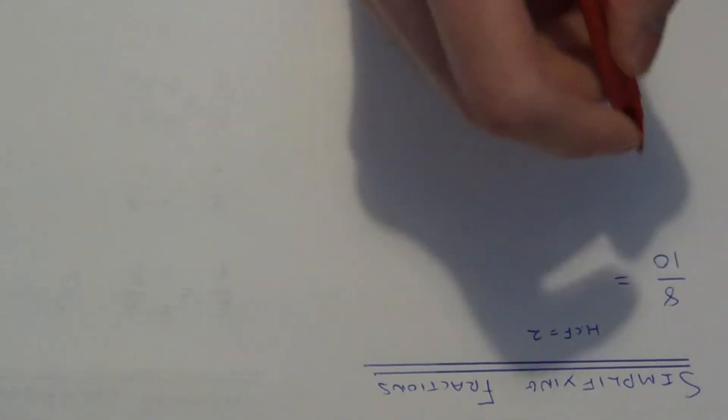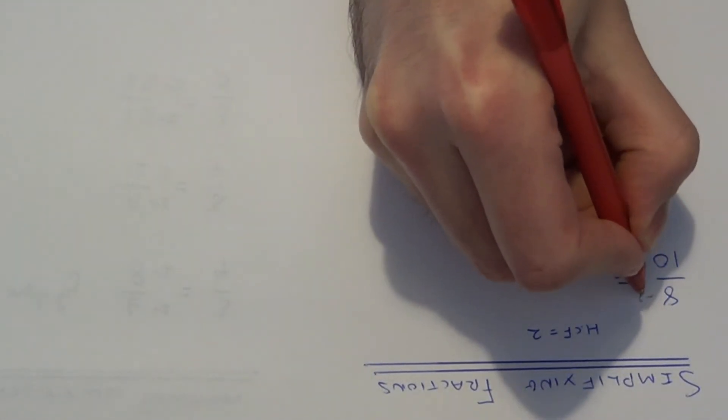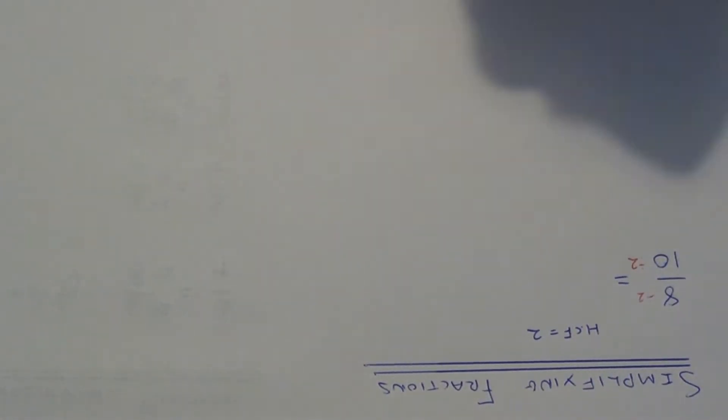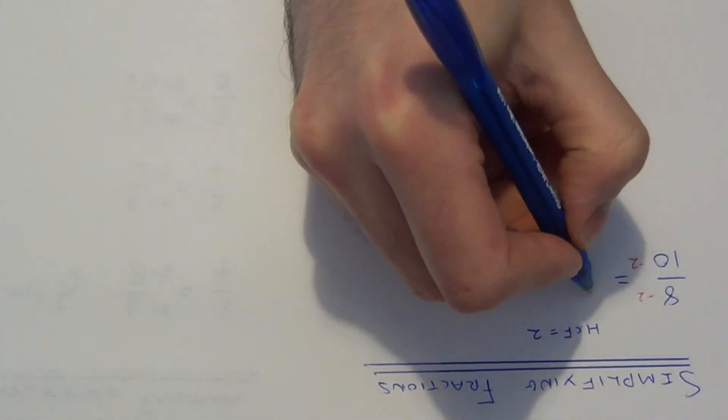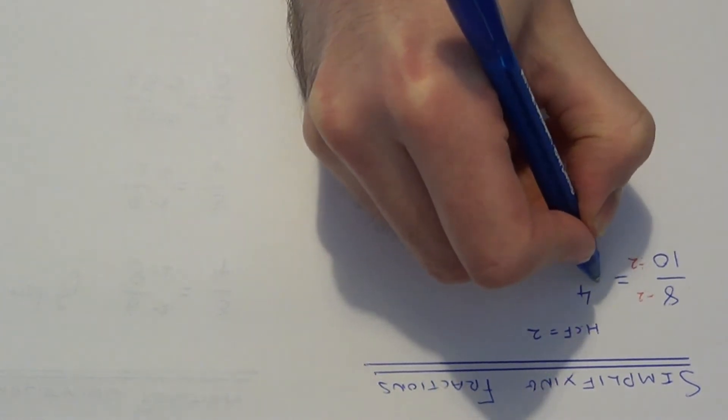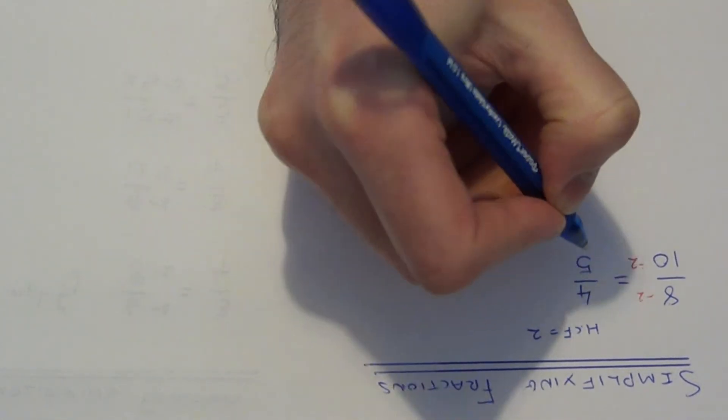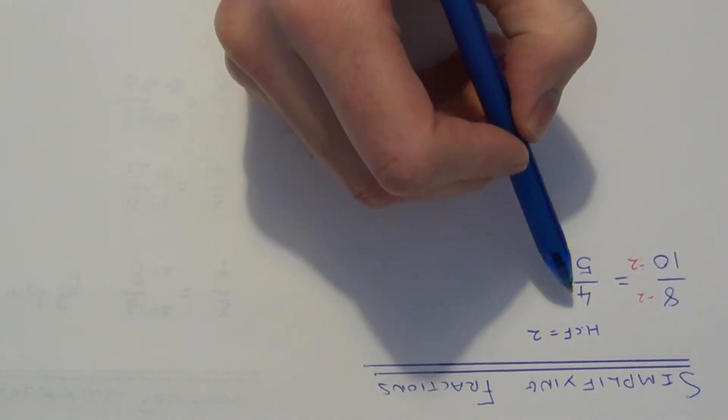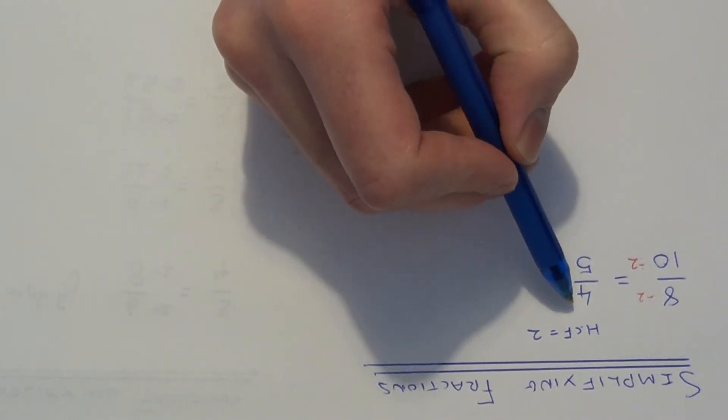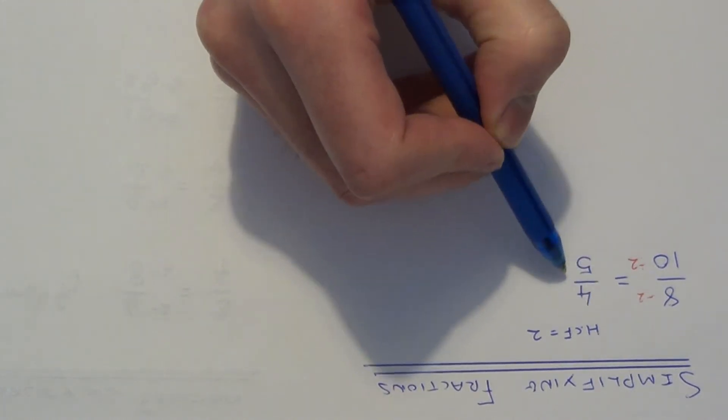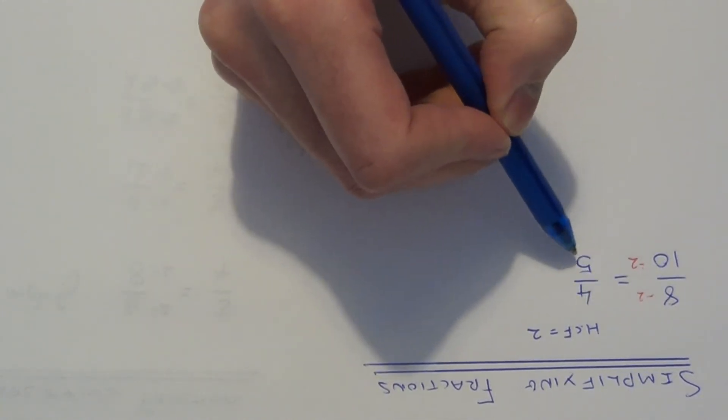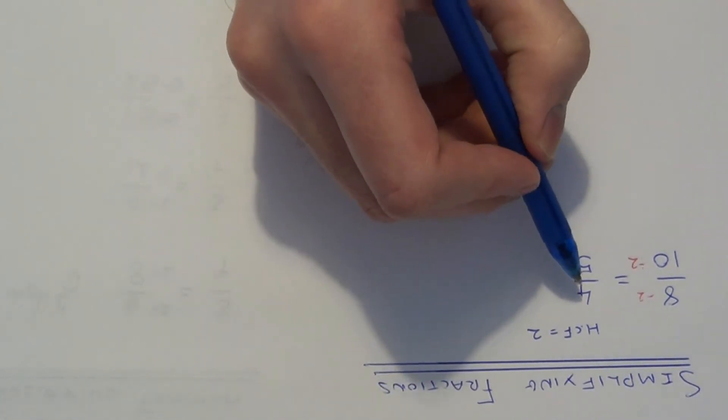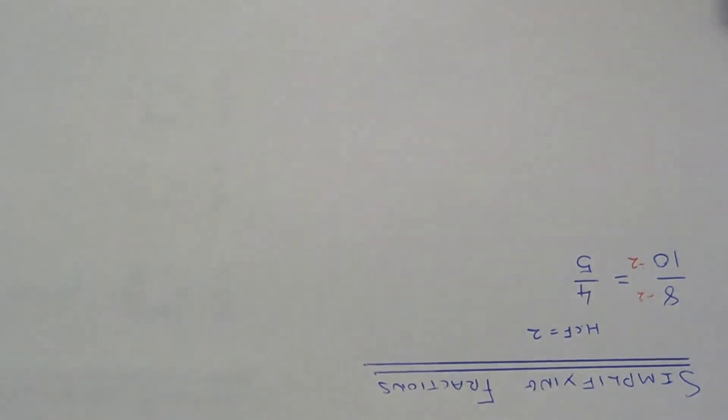So all you need to do is divide the numerator by 2 and the denominator by 2. So 8 divided by 2 gives us 4. 10 divided by 2 is 5. So the equivalent fraction we get is 4 fifths. Now this fraction cannot be simplified any further because the highest common factor of 4 and 5 is 1, and this will not change the fraction if we divide the numerator and denominator by this number.